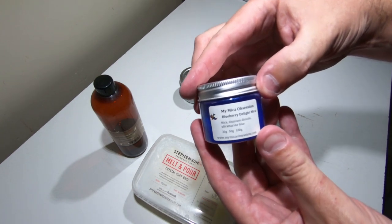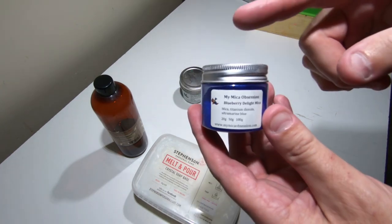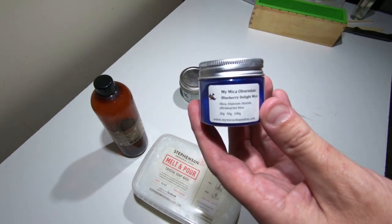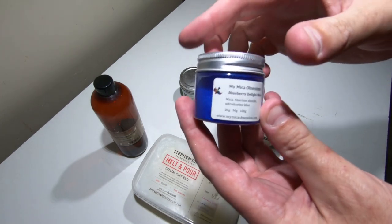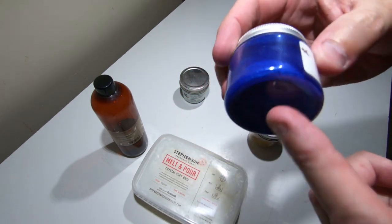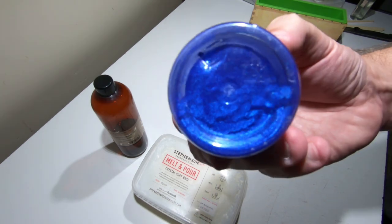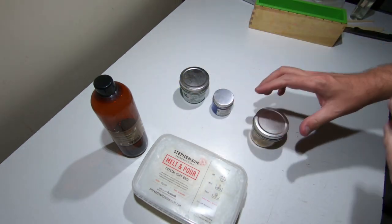The next one is Blueberry Delight, these are from Mica Obsession, a fantastic company here in Australia. This is kind of like a blue sparkly color, it's absolutely gorgeous.